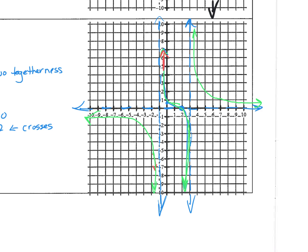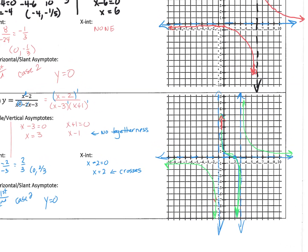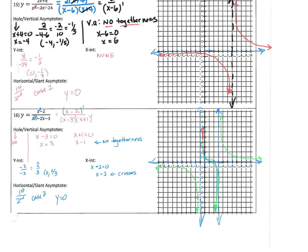Your assignment is to take all of these pieces, put them on the graph, and sketch your graph so you know what it looks like. If you have two vertical asymptotes, you're going to have two cases of either togetherness or no togetherness.